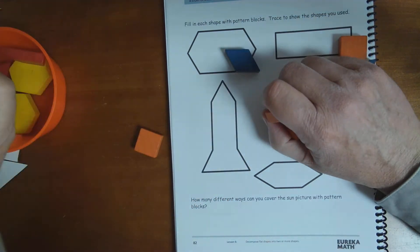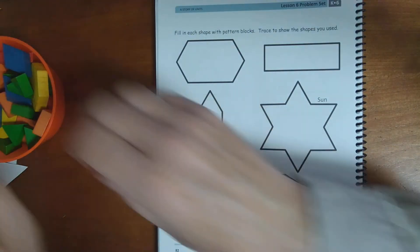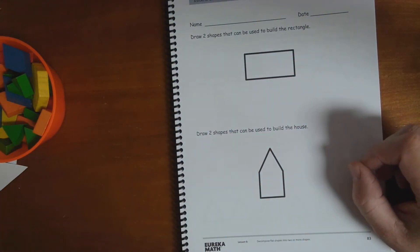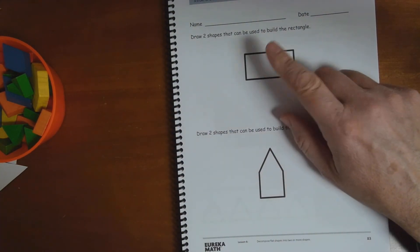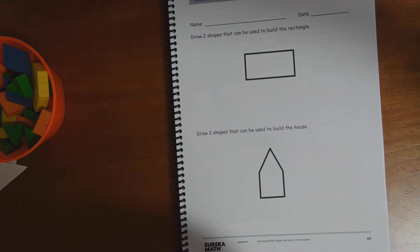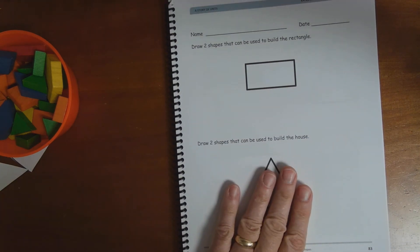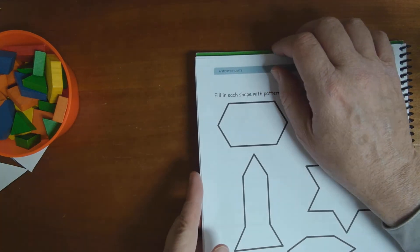for your exit sheet, I want you to do your exit sheet ticket on your own. It just wants you to see what shapes can you draw in here and in here. And you're just going to have to draw them from remembering about what we did with the pattern blocks. Okay.